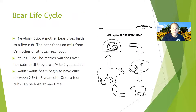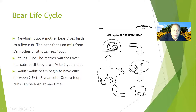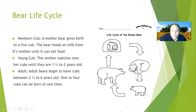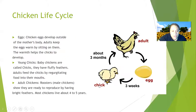Here's a different life cycle — a bear's. It's a little different from a butterfly or frog. A mother bear gives birth to a live cub, and the newborn cub feeds on milk from its mother until it can eat food. Then it becomes a young cub — the mother watches over her cubs until they are one and a half years old. Then it becomes an adult, and adult bears begin to have cubs between two and a half to six years old — one to four cubs can be born at one time.